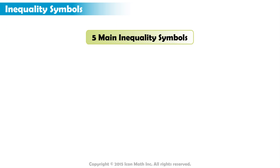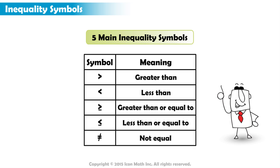There are five main inequality symbols. In this lesson, we will explore each of them and their meanings. Here are the five inequality symbols: greater than, less than, greater than or equal to, less than or equal to, and not equal.